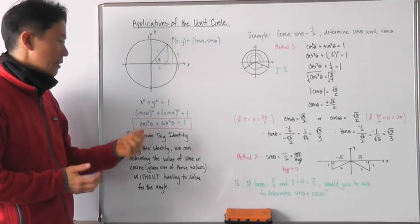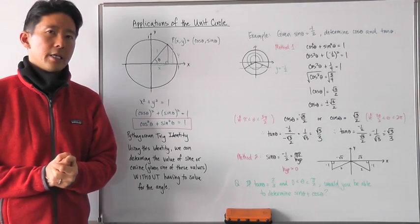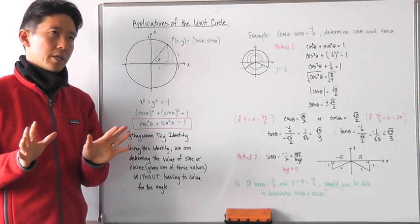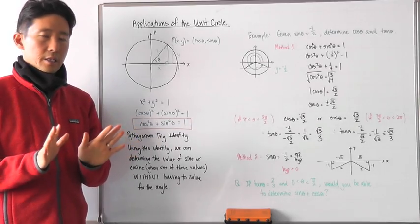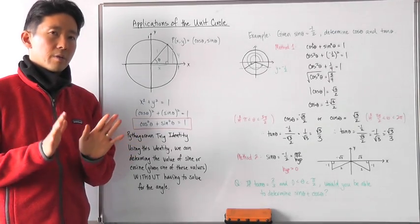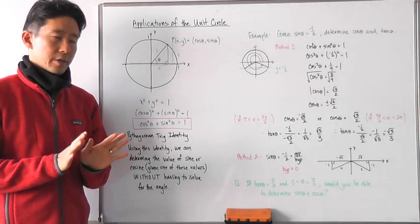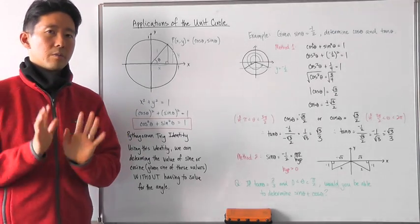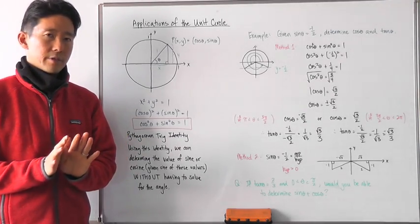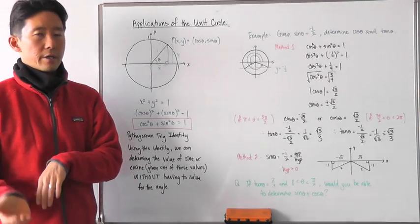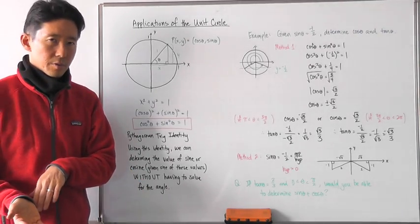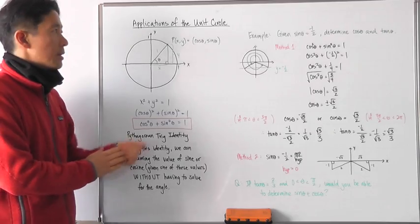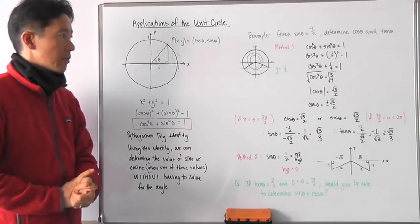What is the value of this particular trig identity? It's that if you're given either sine or cosine theta, you can now go ahead and determine what the other trig value is without solving for the angle. Before, we would also have to determine what the angle was before we could find the associated trig value, but now we don't need to do that. Let's take a look at an example.